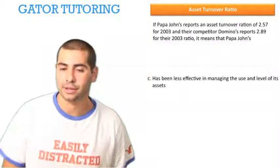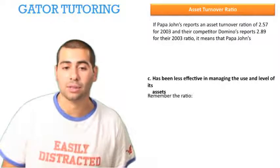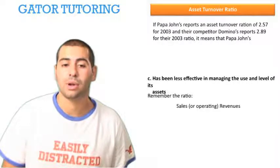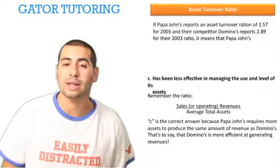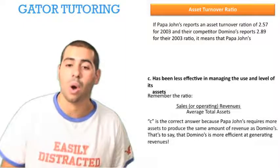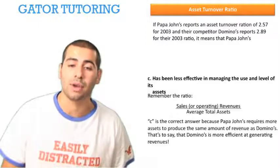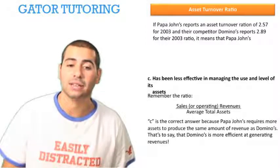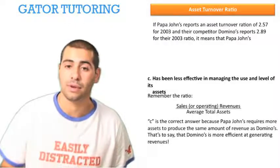The correct answer is C. Remember, the asset turnover ratio is sales or operating revenues over average total assets. C is the correct answer because Papa John's requires more assets to produce the same amount of revenue as Domino's — that's to say that Domino's is more efficient at generating revenues.